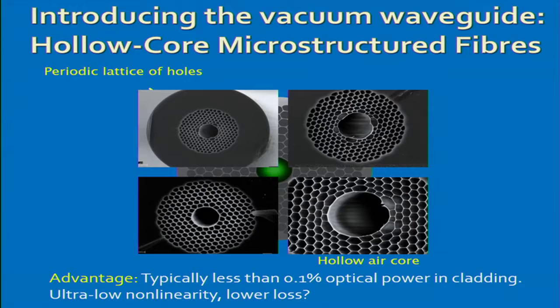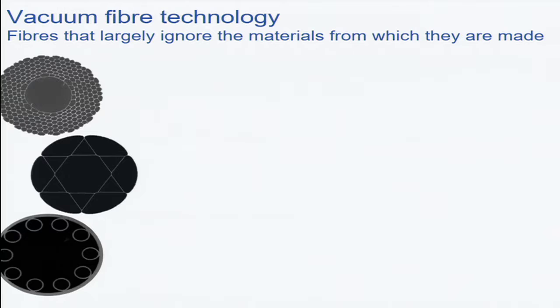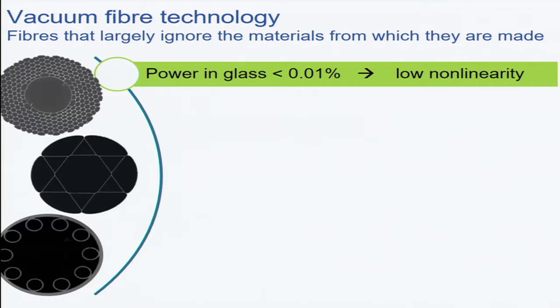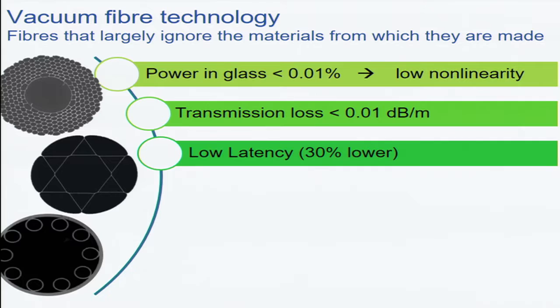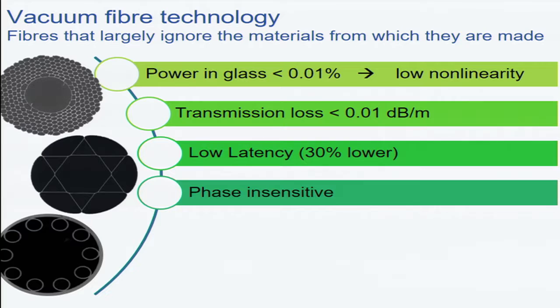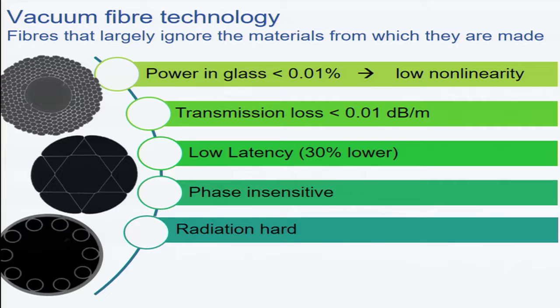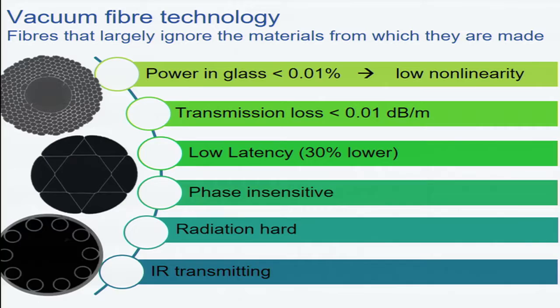This is what they actually look like. Vacuum fiber technology is what I'm calling it. These fibers largely ignore the material from which they're made, which is profound. It means you can start thinking about making fibers from incredibly cheap glasses or polymers, and you can go out into the infrared. In this case, 0.01% transmission loss. At the moment, about a couple of dBs per kilometer — and that's improving almost daily. With low latency, phase insensitivity, and they're radiation hard as well, because the fiber doesn't really care about the loss of the material from which it's constructed.